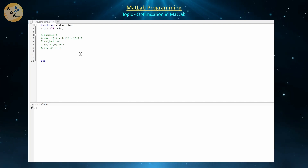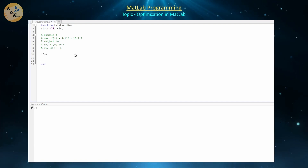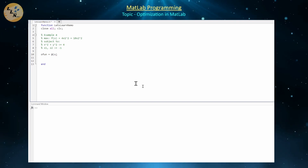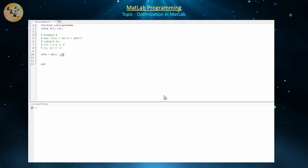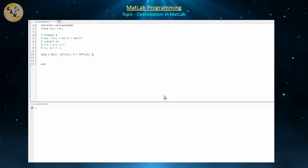We solve this similarly to before. First, define the objective function ofun as a function of x. Since we're maximizing, we negate the coefficients, so ofun = @(x) −(4*x(1).^2 + 10*x(2).^2).